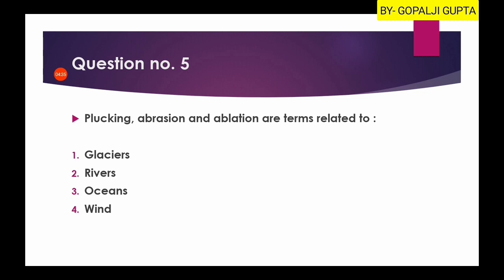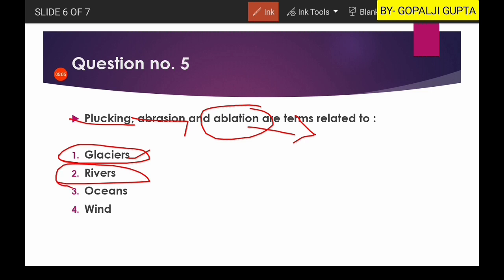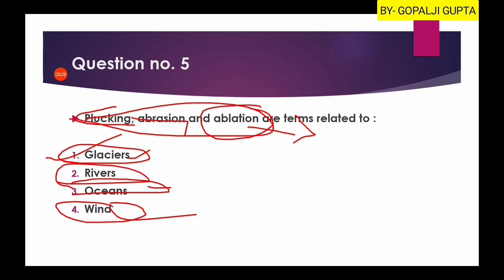Question number five: plucking, abrasion, and ablation — these terms are related to glaciers, rivers, oceans, or winds? These terms are related to glaciers. Plucking and abrasion are erosional processes carried out by glacial activity, and ablation is the melting of ice. Rivers have their own erosional processes such as hydraulic action, abrasion, and chemical action, and oceans and winds have their own as well. So plucking, abrasion, and ablation are completely related to glaciers, and the first option is the right answer.